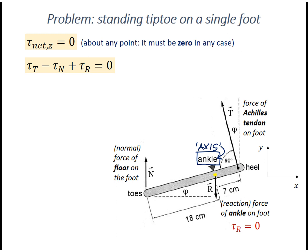With this choice, the only two non-zero torques are the torque of the Achilles tendon and the torque of the normal force. So tau sub t minus tau sub n equals zero. From the provided figure, the distance between the toes and the ankle is 18 centimeters. The distance between the heel and the ankle is 7 centimeters.